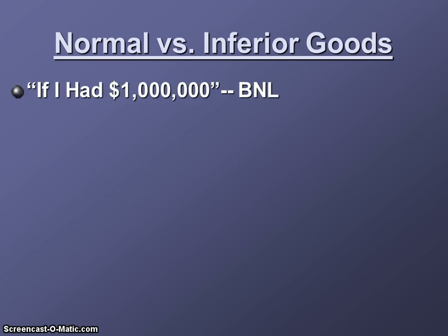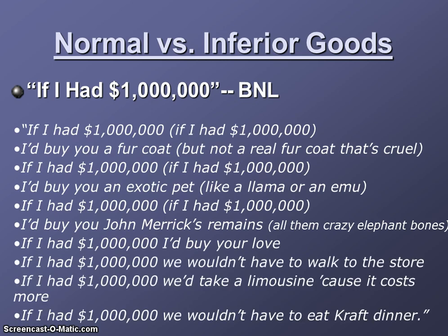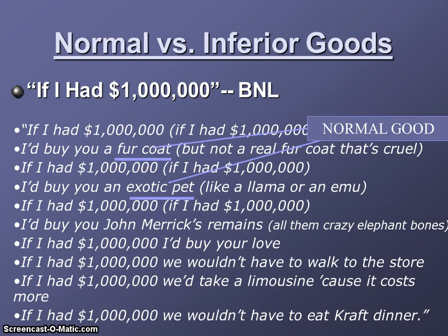We're all familiar with the Barenaked Ladies song "If I Had a Million Dollars." This song talks about all the things these guys would do if they had a million dollars — a fur coat, an exotic pet, etc. All the things they're talking about are normal goods, because if they had more money, they'd buy more of them. Until we get to: "If I had a million dollars, we wouldn't have to eat Kraft Dinner." So Kraft Dinner would be an inferior good.